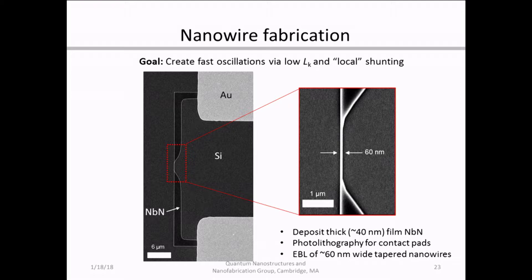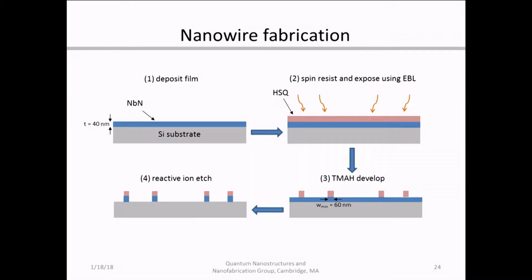Here I've shown the scanning electron micrograph of our device, with an inset showing that 60-nanometer taper. The nanofabrication was done entirely through electron beam lithography. First, we deposited the film on a silicon substrate. Afterwards, we spun electron beam resist and exposed it in the 125 kV EBL system here. We then developed the pattern in TMAH, and finally completed the pattern transfer to the underlying superconducting substrate using reactive ion etching in CF4.